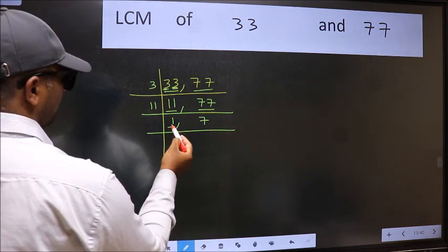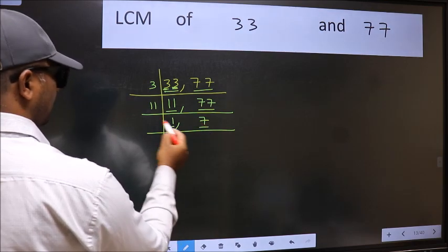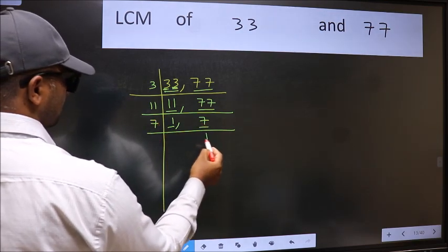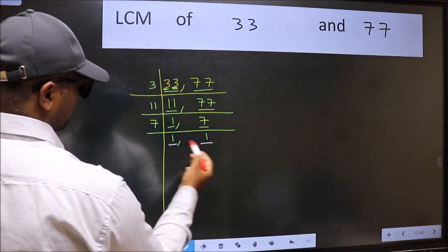Now we got 1 here, so focus on the next number 7. 7 is the prime number, so 7 ones 7. So we got 1 in both the places.